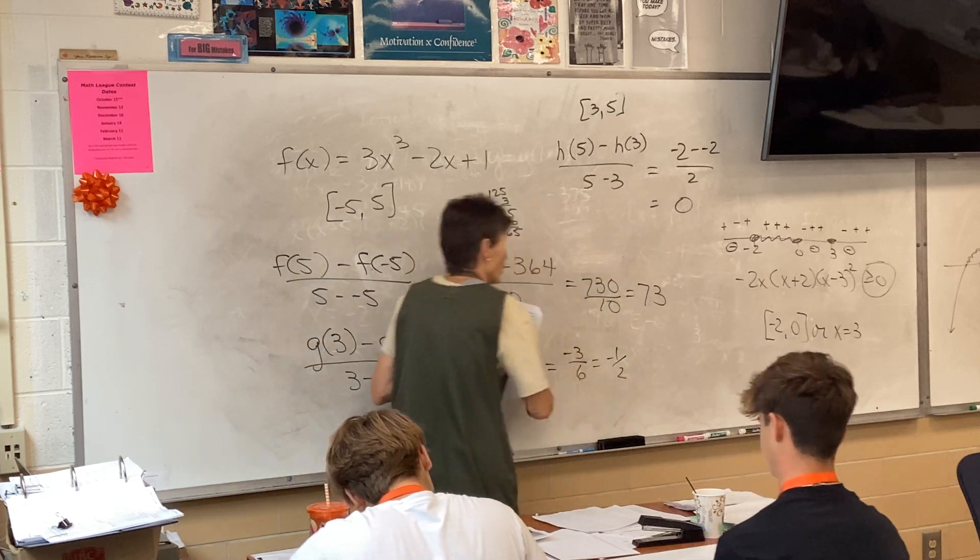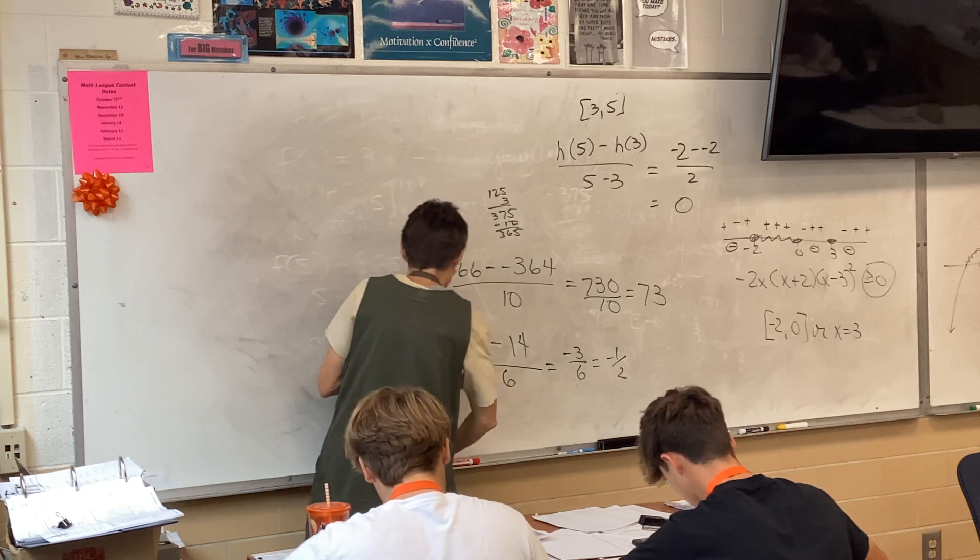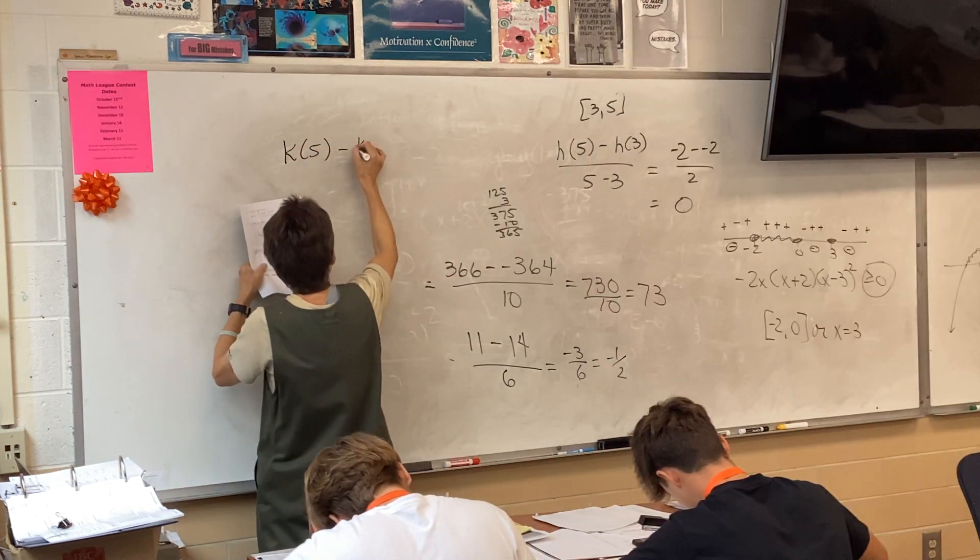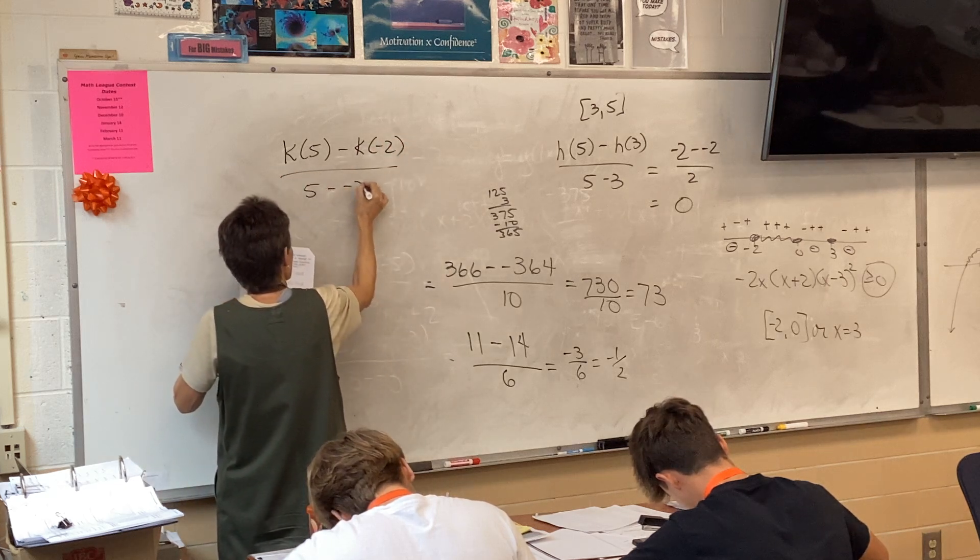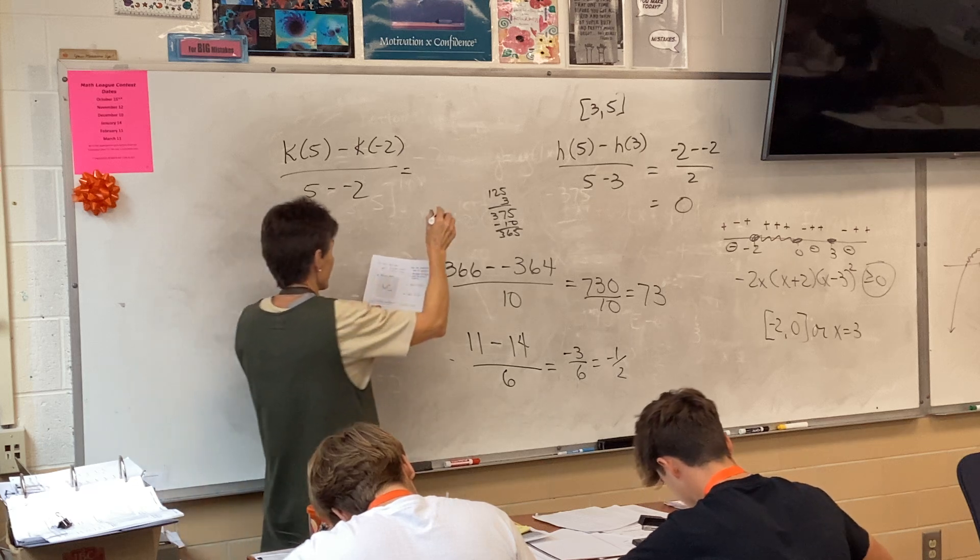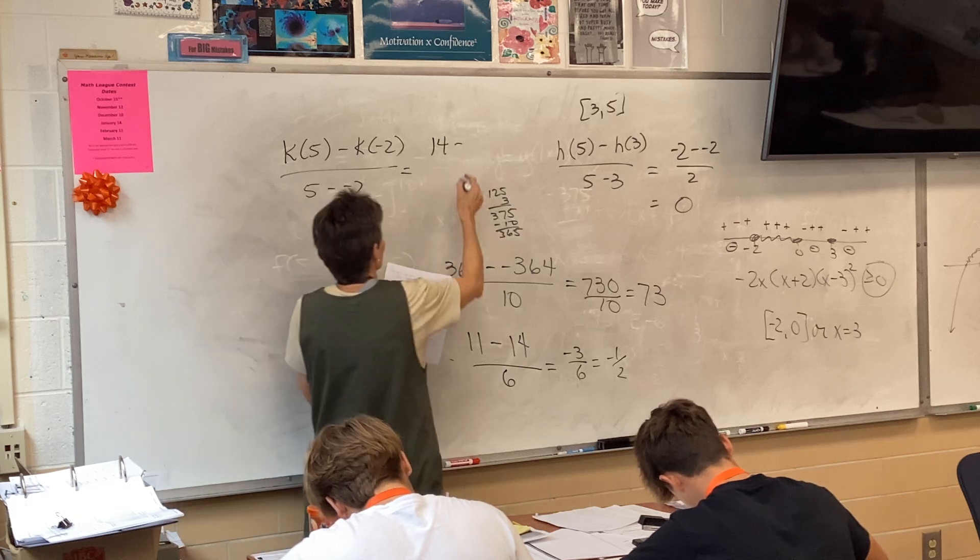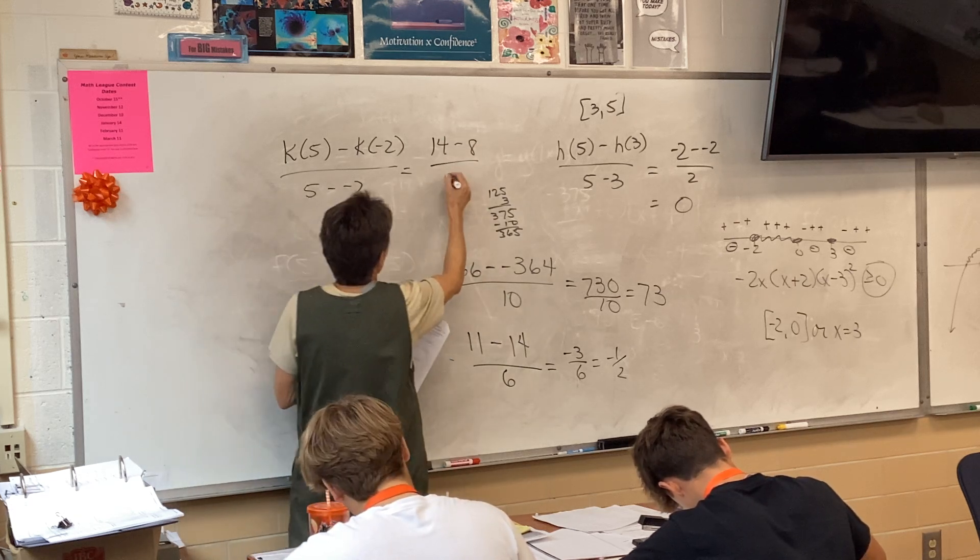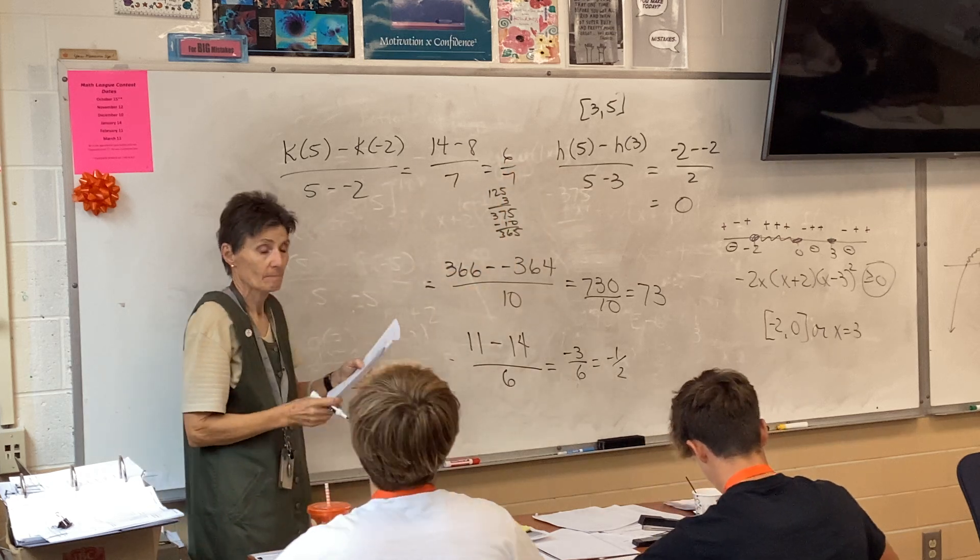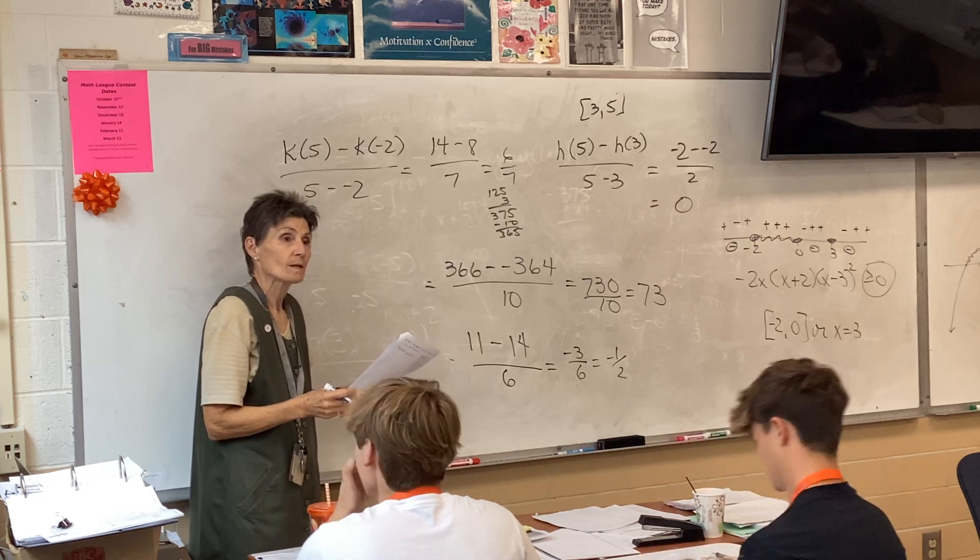Alright, and then finally our chart. So you're going to set up K of 5 minus K of negative 2 over 5 minus negative 2. So K of 5 is 14. K of negative 2 is 8 over 7. Alright, so I got 6 of it. Everybody okay?